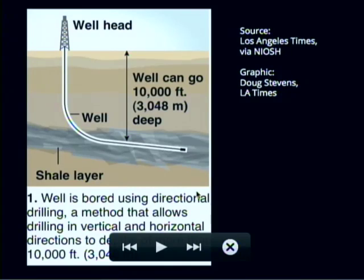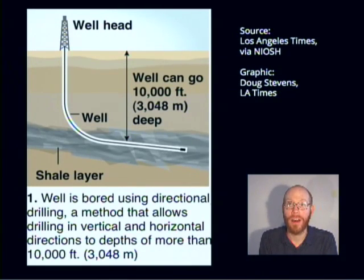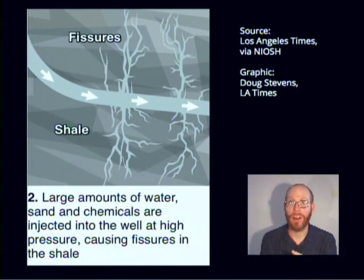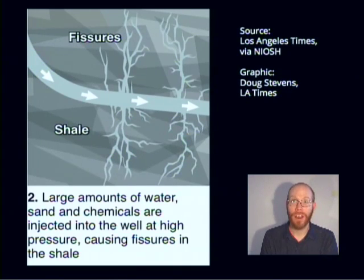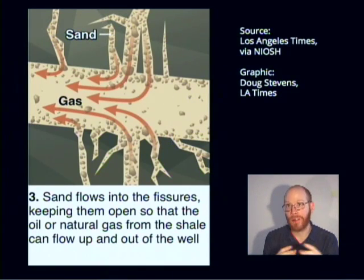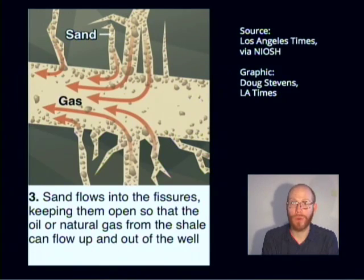So what is frac sand? Frac sand is used for fracking, or hydraulic fracturing, which is a technique whereby high-pressure water is forced into oil and gas-bearing rocks to create fissures that then open up and allow the gas or oil to escape. To do that, those fissures have to be held open, and so sand is injected into the well to pack into the fissures. It's a really rounded sand so that the oil and gas can pass through the spaces between the grains.